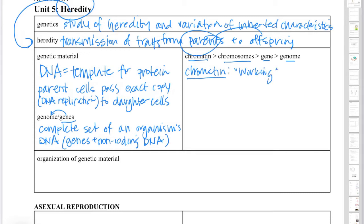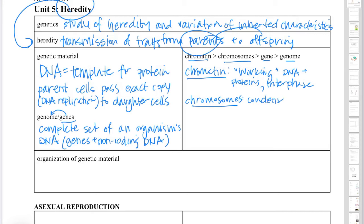Now we've got some C words to define. From last unit, chromatin is working DNA — it's the DNA that is relaxed. It may not be actively being transcribed into RNA at that very moment, but it's accessible, or at least potentially accessible. It's wrapped around specific proteins called histone proteins, and it's present during interphase. On the other hand, chromosomes are condensed chromatin, and they're present during active cell division — mitosis — and, as we'll learn this unit, meiosis.